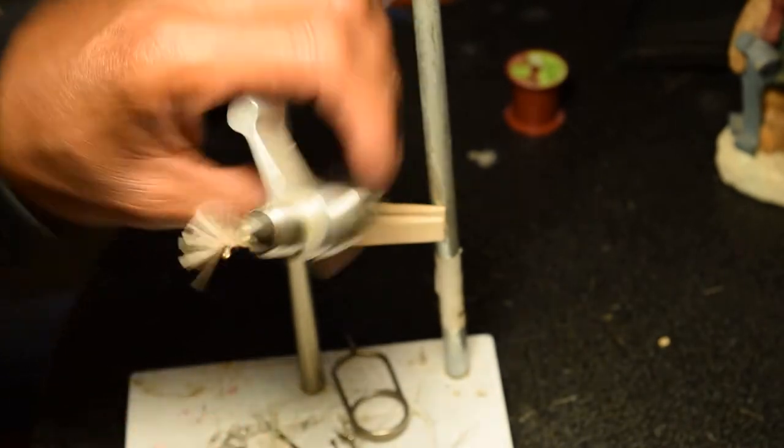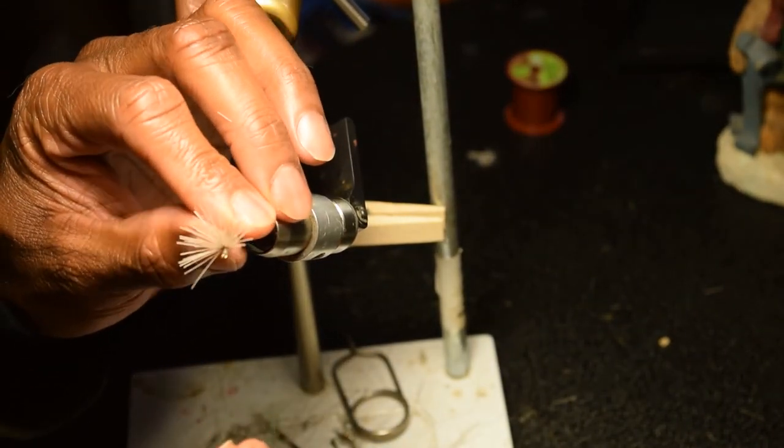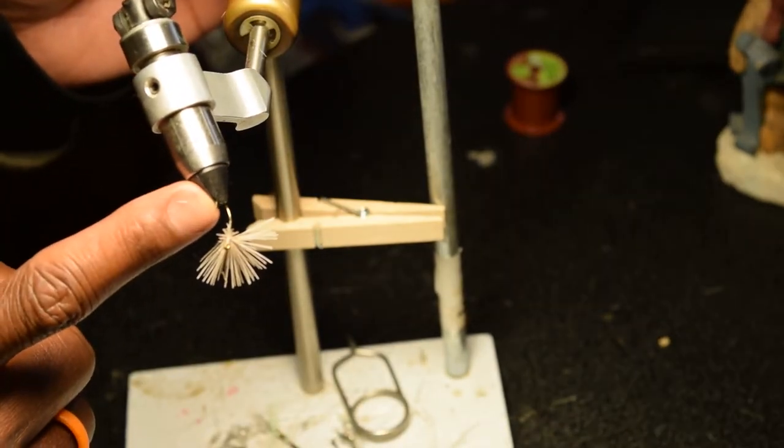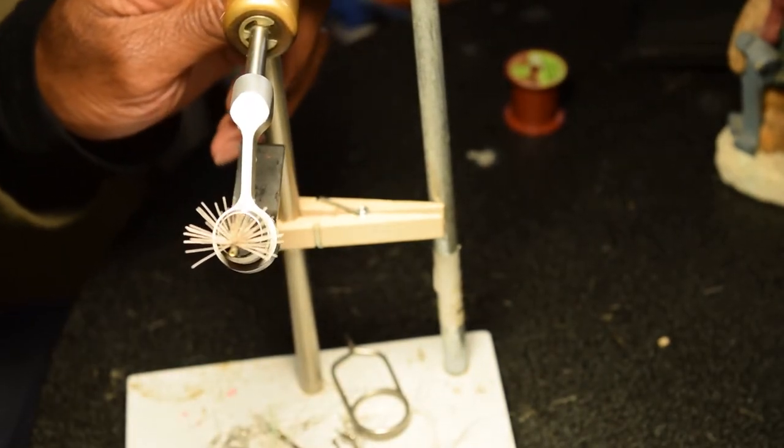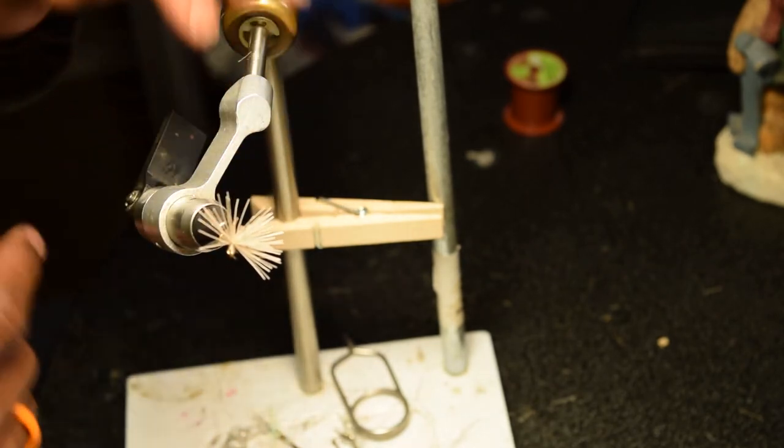Now those of you who tie flies for bluegill, that should look a whole lot like a Bully's bluegill spider, except instead of silly legs we're using deer hair. The tip of the hook is completely open. This material is floating on top to keep the hook in that oriented position. It keeps it up off the bottom of the river.